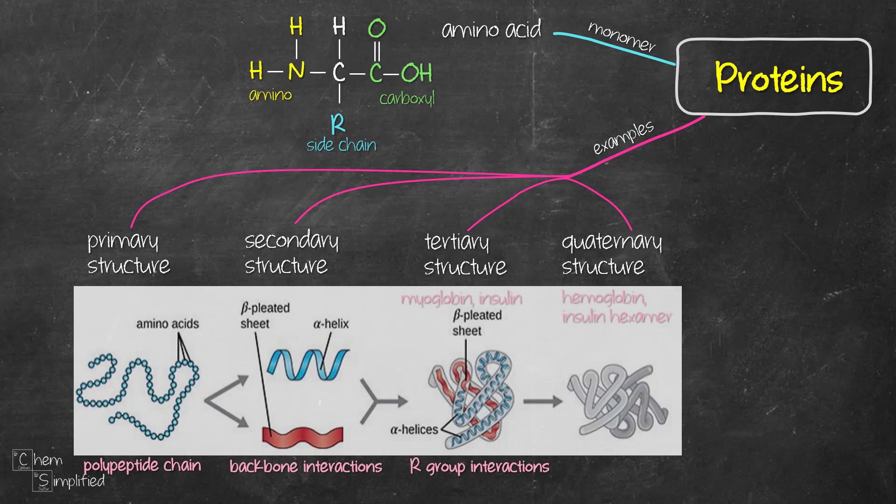Take our hair for example. The protein that's present in our hair is called keratin and the alpha helices in our hair are held by hydrogen bonding, that's the secondary structure, and disulfide bonds, that's the tertiary structure.